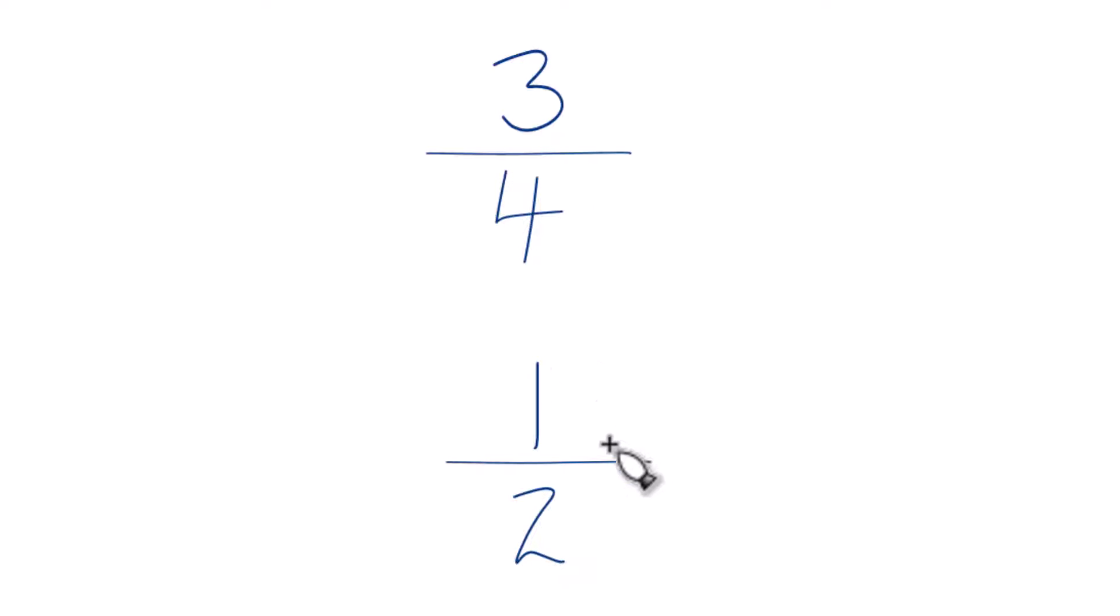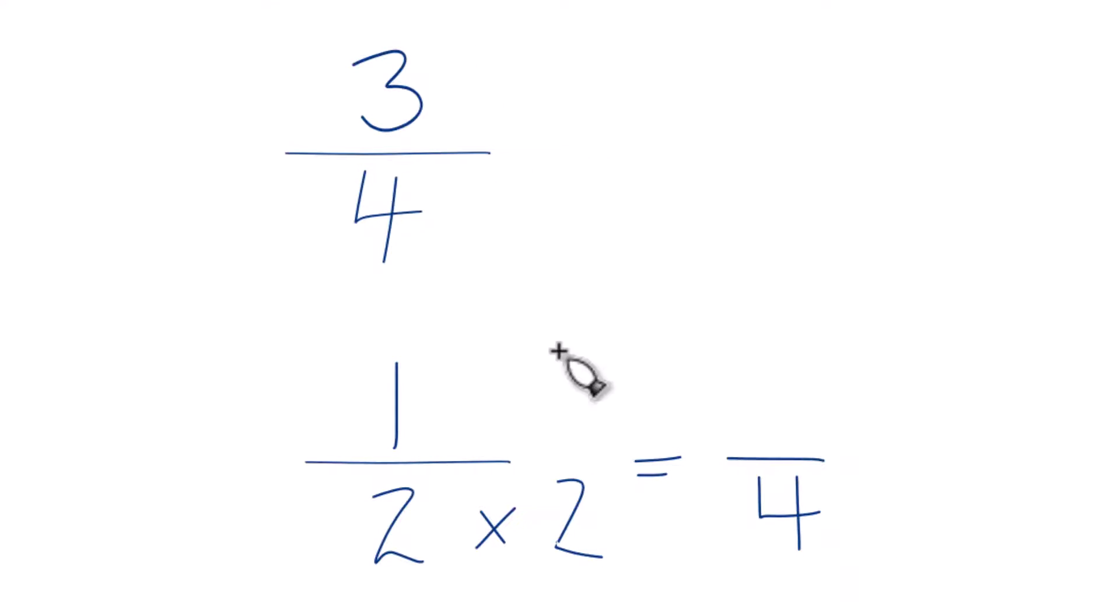2 goes into 4 twice. So we could say 2 times 2. That would give us 4. So now we have 4 in our denominator. We already have 4 up here. Let's just keep this the same. 3 fourths.